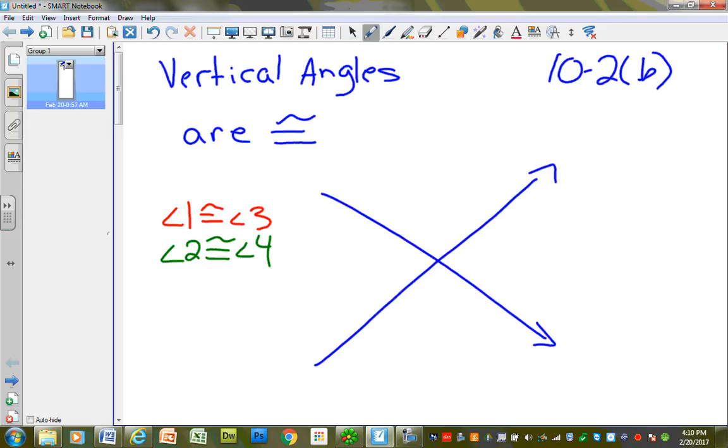And if I say, for instance, that this Angle 1 right here is 94 degrees, the angle that it is congruent to is right across from it. It's Angle 3, so it is also 94 degrees. So we can fill that in.